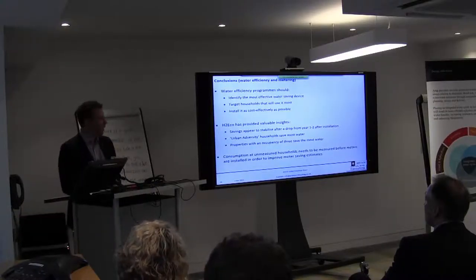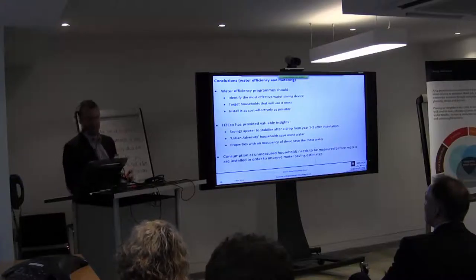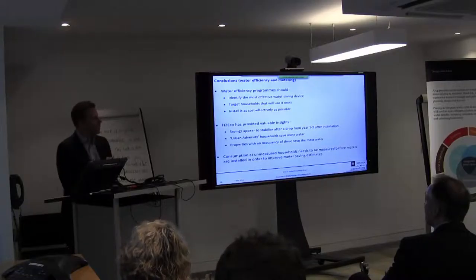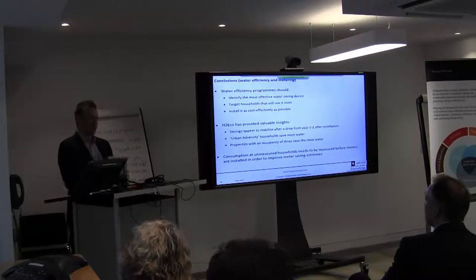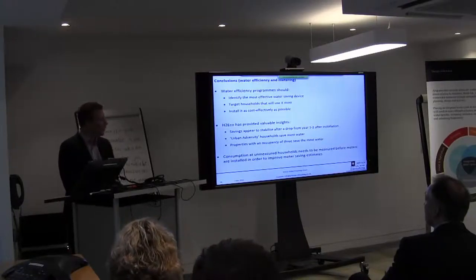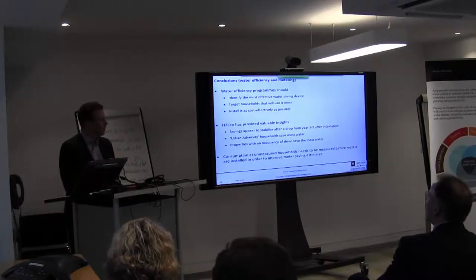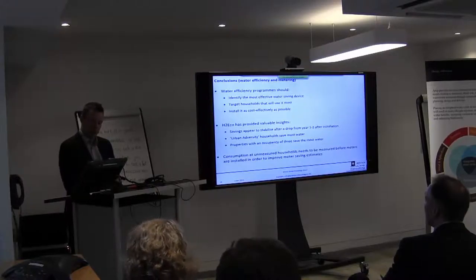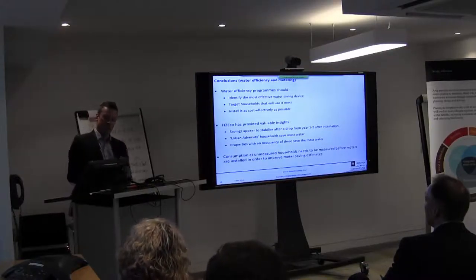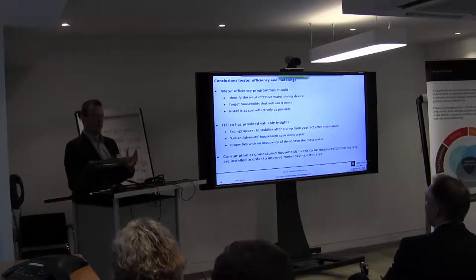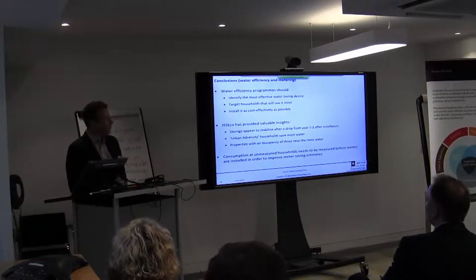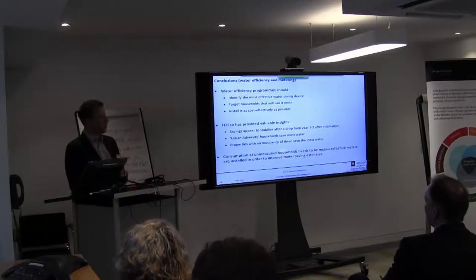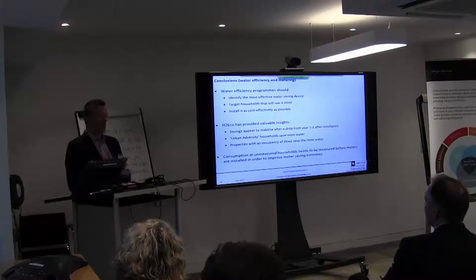After that initial drop, savings do tend to stabilise over a three or four year period. That's from H2Eco phases one to five, where those devices have been in place for two, three, four, or five years. In terms of who saves the most water, analysis in the report shows that urban adversity households save the most - perhaps the most amenable to change, or perhaps because installation in social housing allows us to reach a large number of properties quickly.